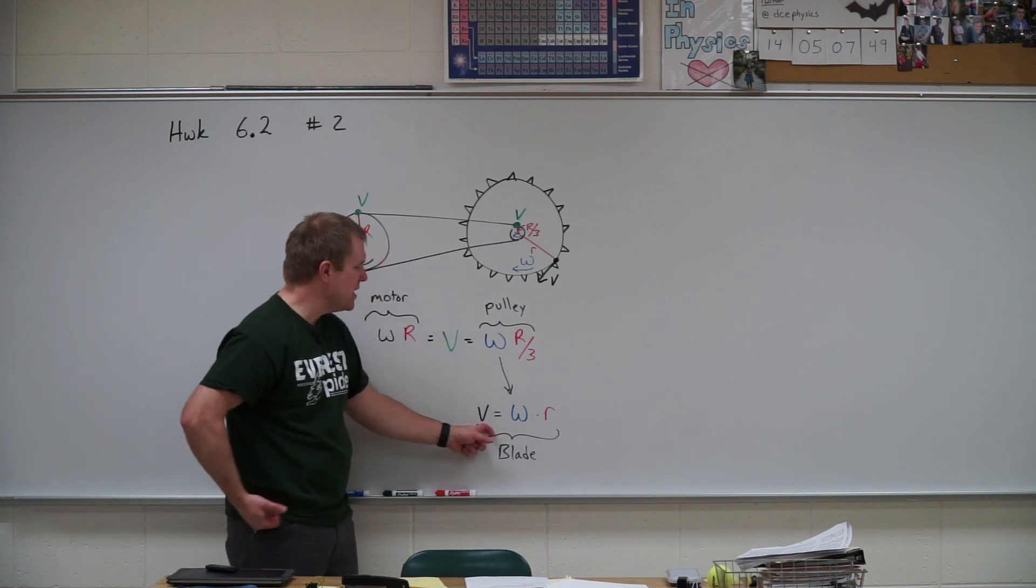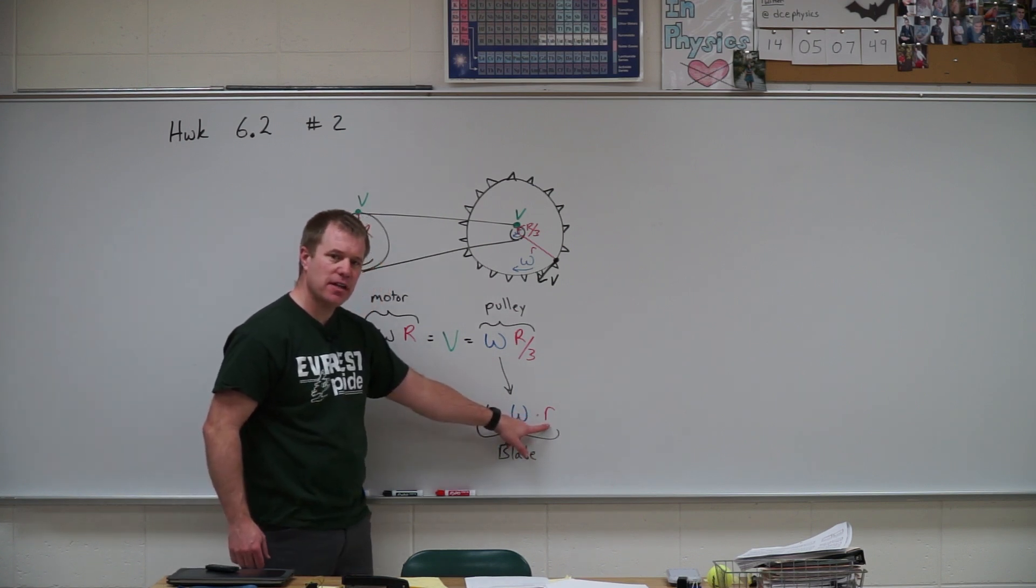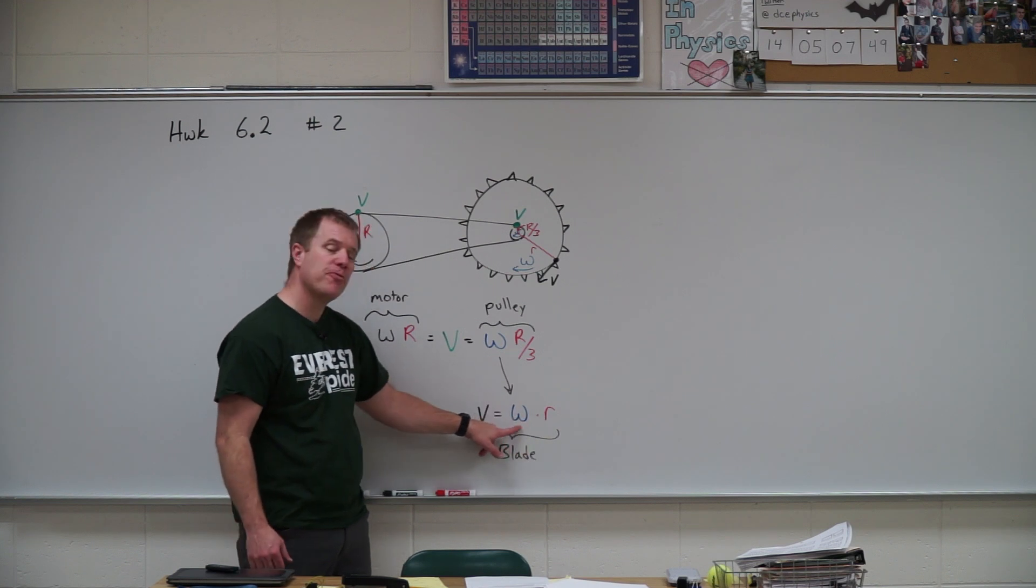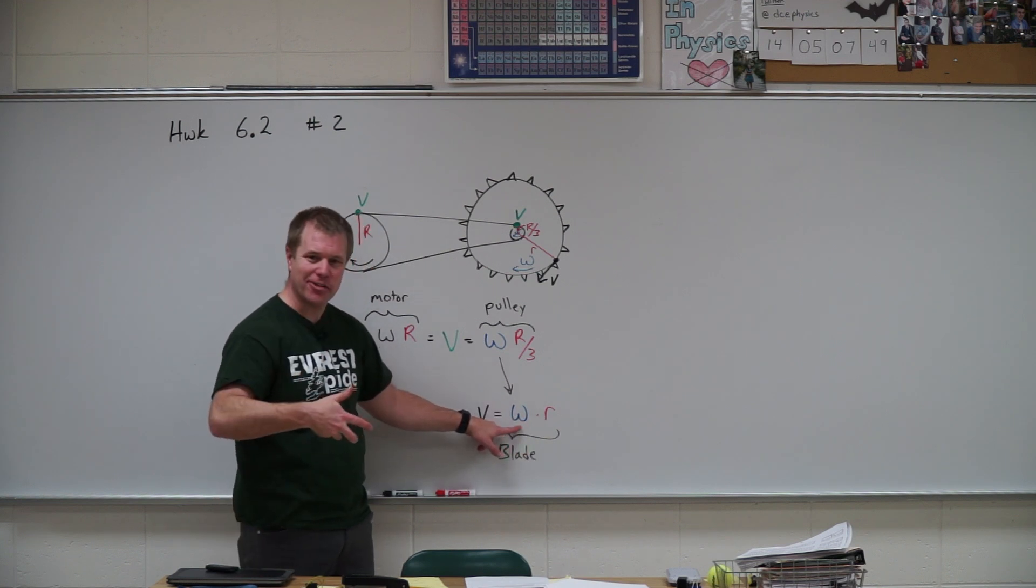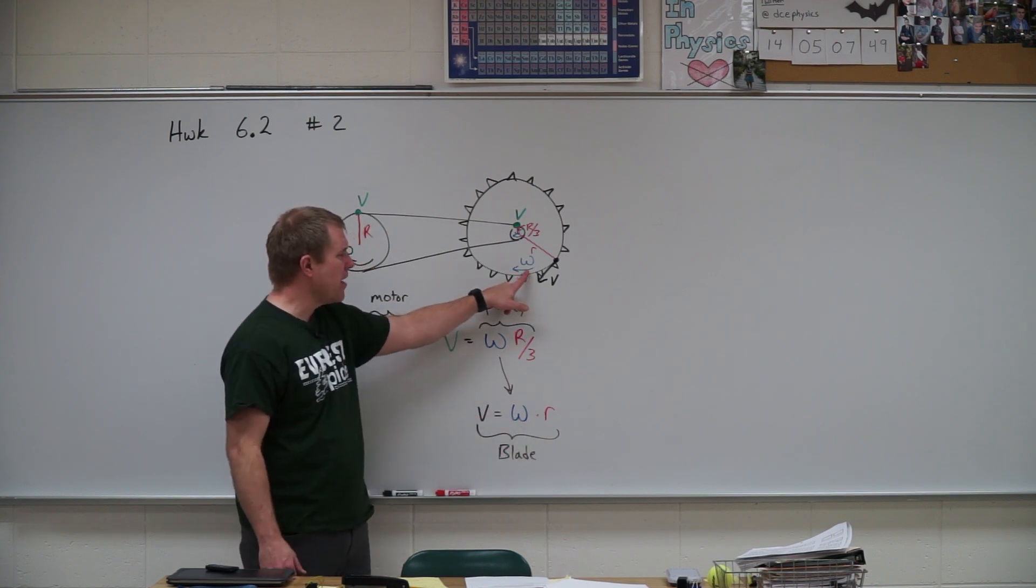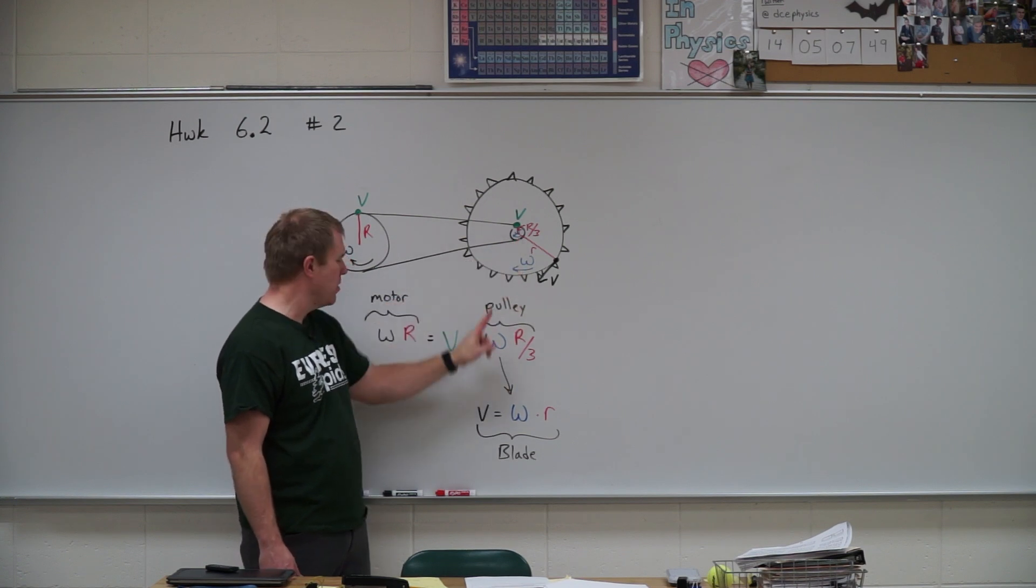So in order to do that, I'm going to need to know the radius of the saw blade, which they give to me, and how fast it's rotating angularly. So my goal is to find this omega, so I'm going to have to find the omega of the pulley.